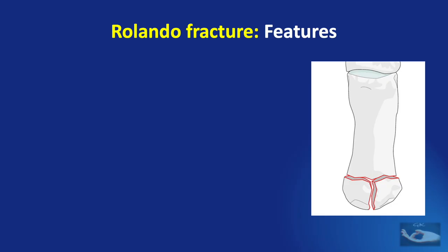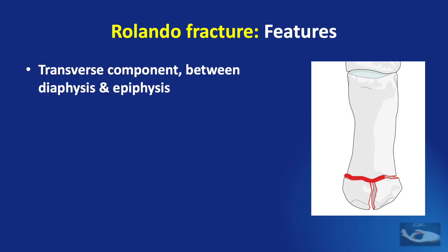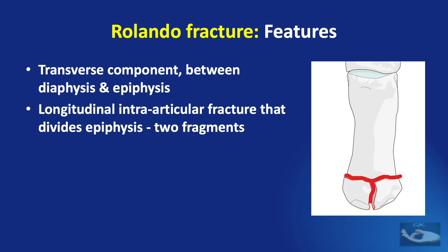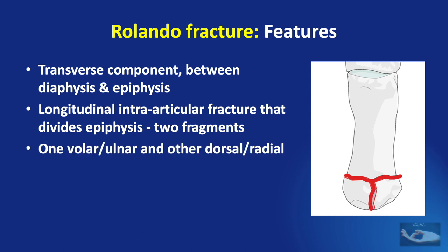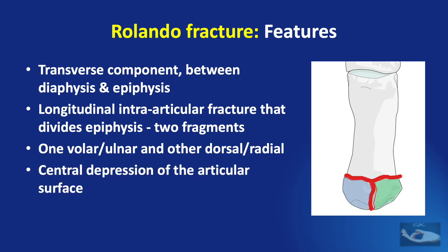It consists of a transverse component between the diaphysis and epiphysis, and a longitudinal intra-articular fracture that divides the epiphysis into two fragments — one volar and ulnar, and the other dorsal and radial. As a result of this, there is a central depression of the articular surface.